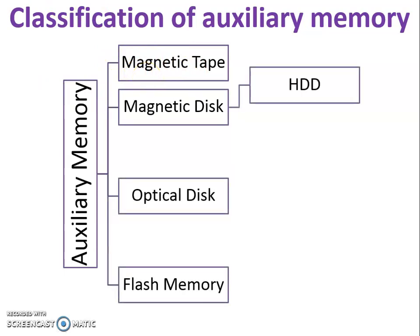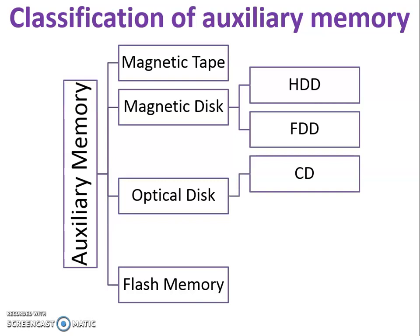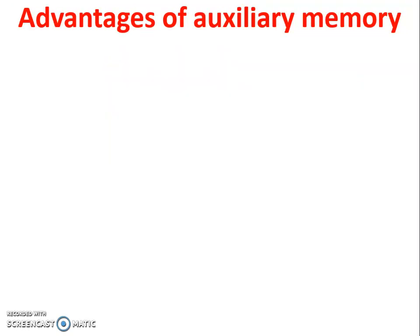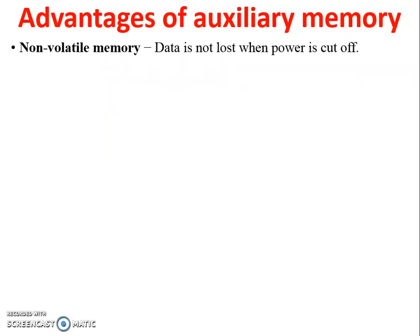In detail: magnetic disk is divided into two parts — hard disk and floppy disk. Optical disk is divided into two parts — CD and DVD. Flash memory is divided into two parts — pen drive and memory card, etc.